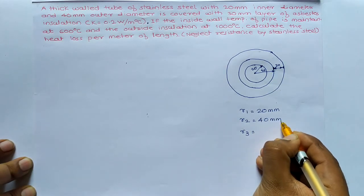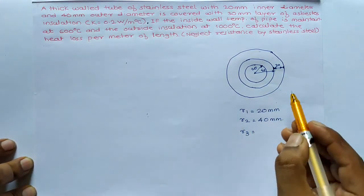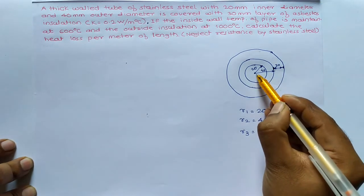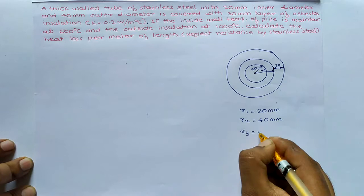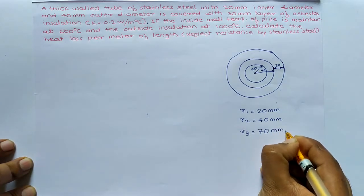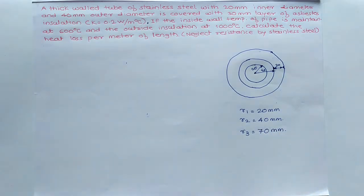40mm. And what about the R3? R3, it should be the addition of 40 plus 30. It should be 70mm. Don't forget this one.